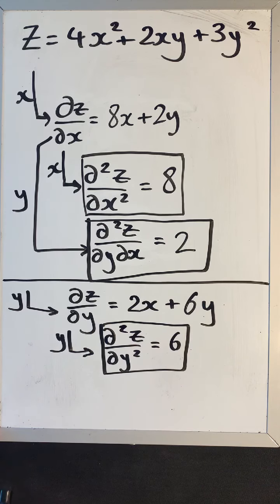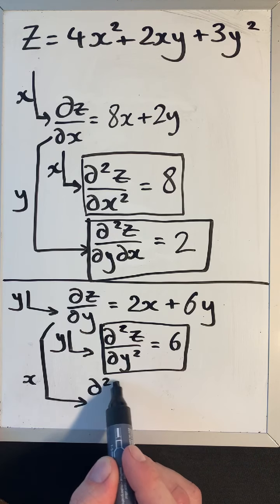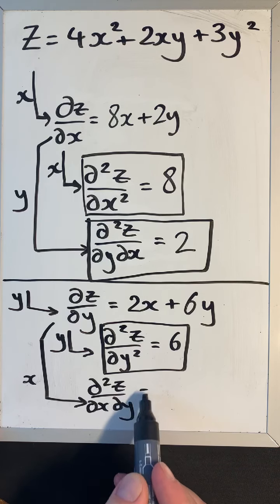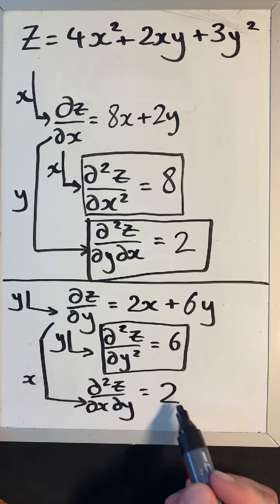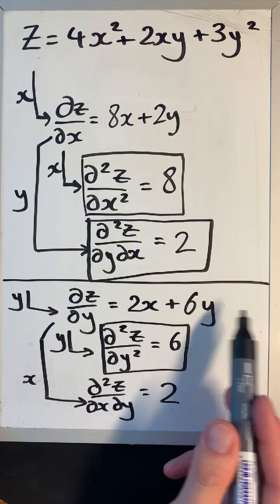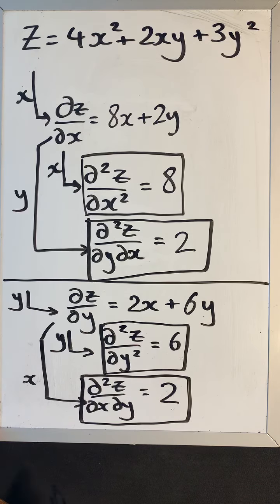Finally, differentiating ∂z/∂y = 2x + 6y with respect to x: 2x gives 2 and 6y disappears as a constant. So ∂²z/∂x∂y = 2. Notice that ∂²z/∂y∂x = ∂²z/∂x∂y = 2, confirming our result. Those are the four second-order partial derivatives for this function.